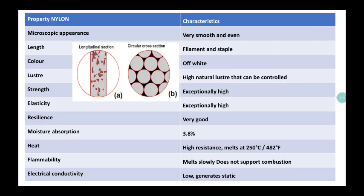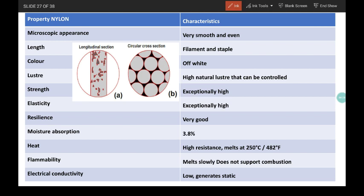Just take a look at the properties of nylon fiber. When we look at its macroscopic appearance, it is very smooth and even. You can see here the microscopic structure. The length can be filament or staple because it can be controlled by the producer depending upon the requirement or end use.